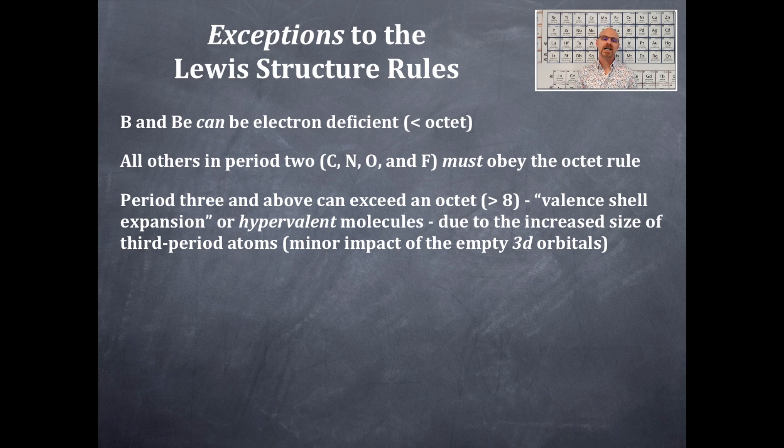The reason that this occurs is because of the increased size of period three atoms and there's a minor impact due to the 3d orbitals being the first time that you have a d orbital because there are no 2d's.